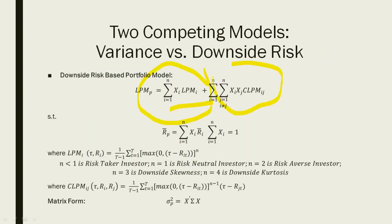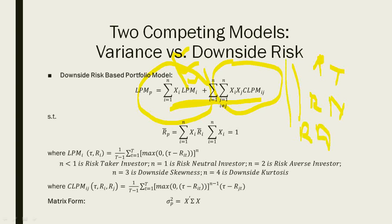Coming to the second model, it also covers diversifiable and non-diversifiable sides, but the proxy of risk is changed. The proxy of risk can be downside risk, downside skewness, or downside kurtosis. This model is very flexible — it can accommodate all types of investors: risk taker, risk neutral, and risk averse. It is a much more flexible model compared to the Markowitz model.